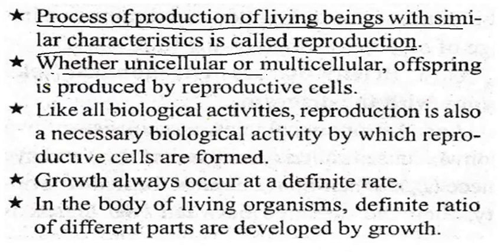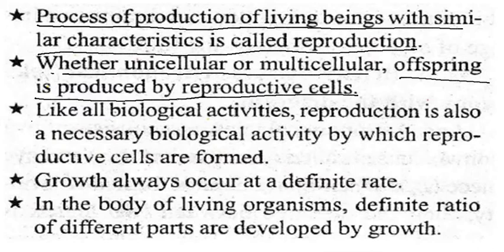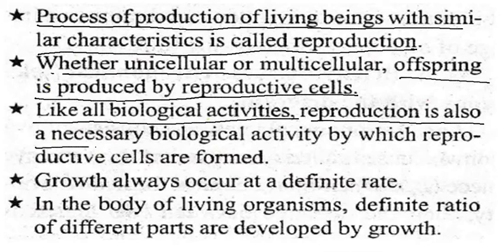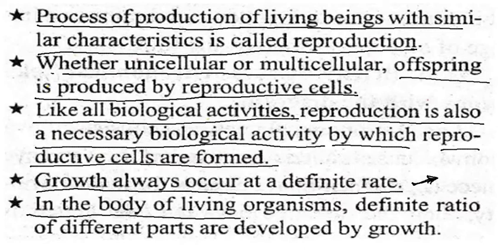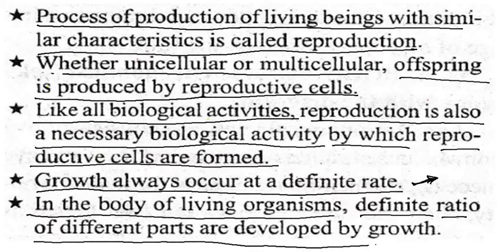Whether unicellular or multicellular, offspring is produced by reproductive cells. Like all biological activities, reproduction is also a necessary biological activity by which reproductive cells are formed. Growth always occurs at a definite rate — that means growth has always a definite rate. In the body of living organisms, definite ratios of definite parts are developed by growth.